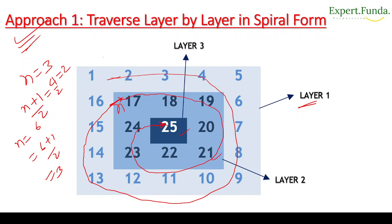To find the number of layers, the formula is (n+1)/2. For n equal to 3: (3+1)/2 = 2 layers. For n equal to 6: (6+1)/2 = 3 layers. So for all values of n, we find the number of layers using this formula.